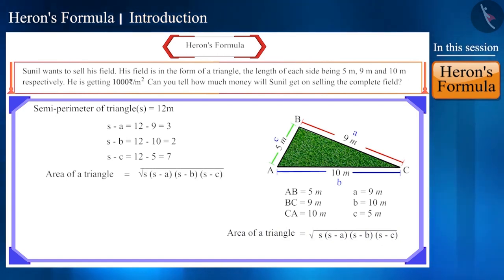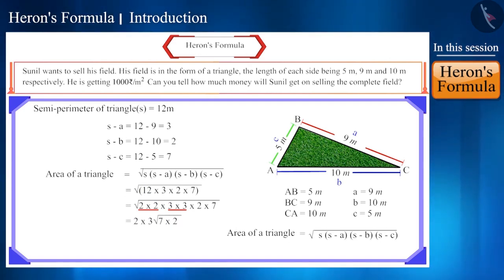According to Heron's formula, this will be the area of triangle ABC. Here, we can write 12 as 2 times 2 times 3 and now if we take out a number from the pairs of 2 and 3 from the bracket that is 6 root 14 square meter.